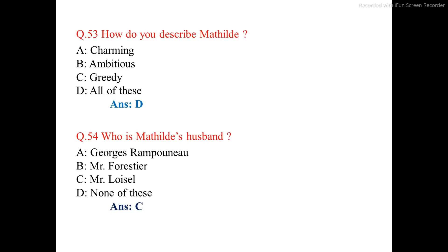Question number 53. How do we describe Mathilde? The options are: charming, ambitious, greedy, all of these. The correct answer is option D: all of these.